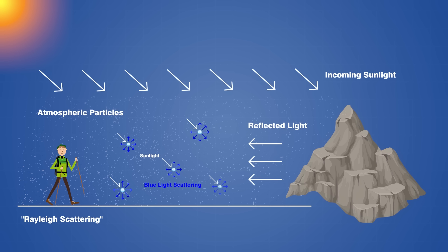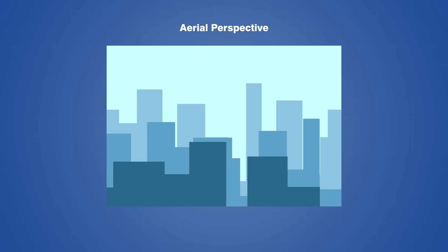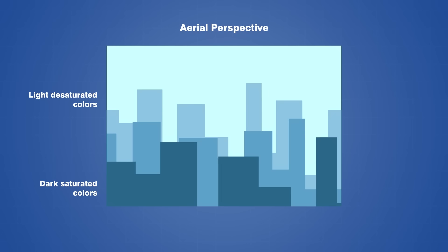Water droplets tend to scatter blue and violet wavelengths more than other colors on the visible spectrum, and so distant objects can also appear to have a slight blue tint because more of these photons get directed towards our eye from incoming sunlight. For the purpose of forced perspective, it can be useful to replicate these natural phenomena artificially to make it seem like nearby structures are actually far off in the distance. This technique is commonly referred to as aerial perspective, and it can be illustrated quite well with a simple animation of a city skyline. Even though this is just a flat two-dimensional image, we can create a sense of depth by using dark saturated colors in the foreground, and lighter desaturated colors in the middle and background.